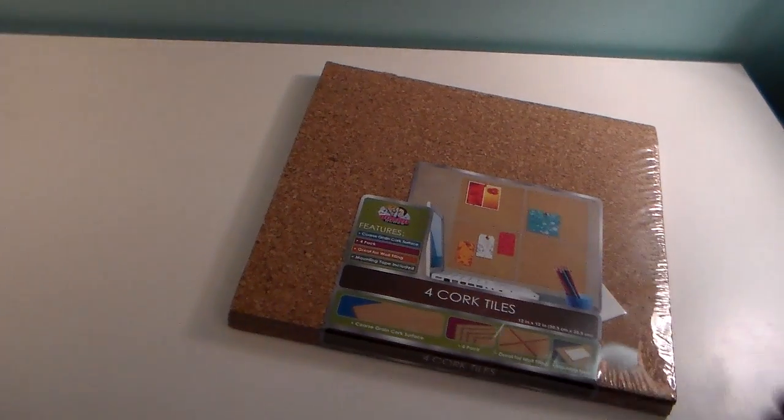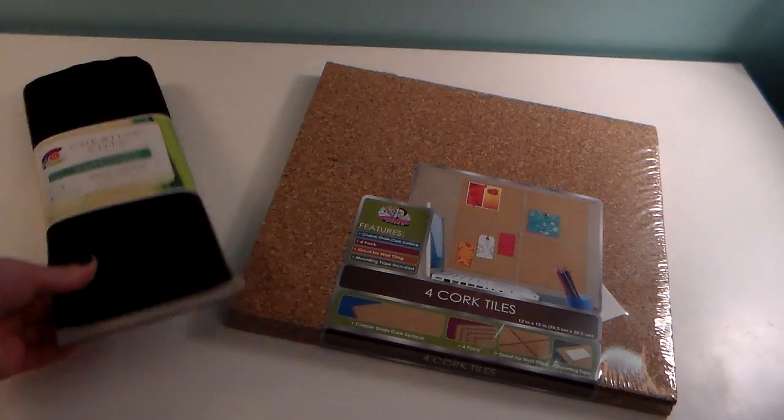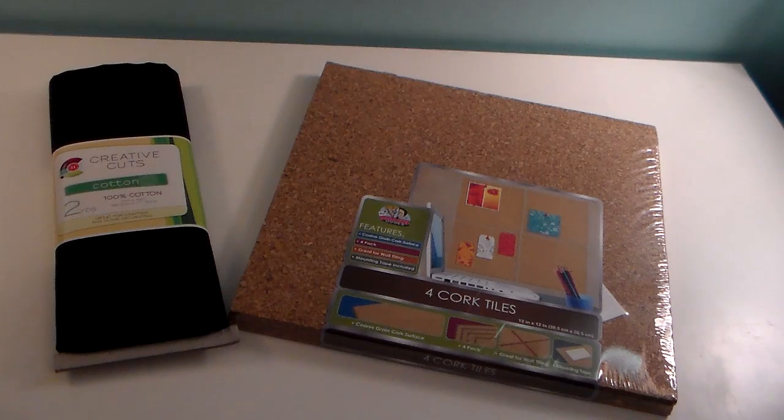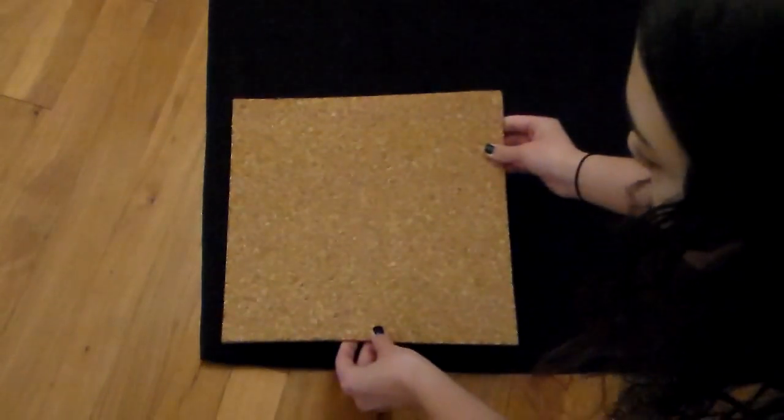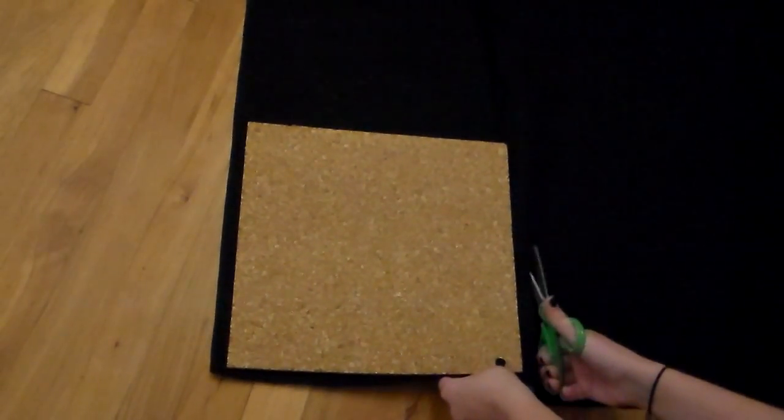For this DIY you're getting some cork boards and fabric. I bought both of these at Walmart, so they're definitely highly accessible and affordable. Cut the fabric around the cork board, leaving about a half an inch.